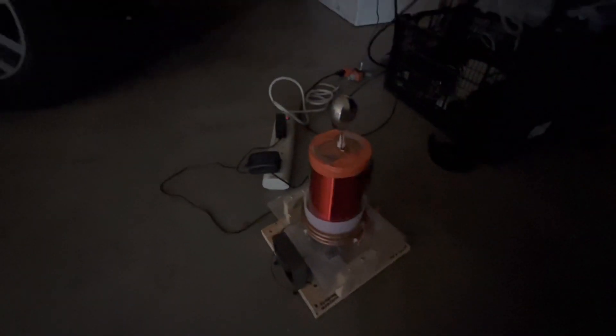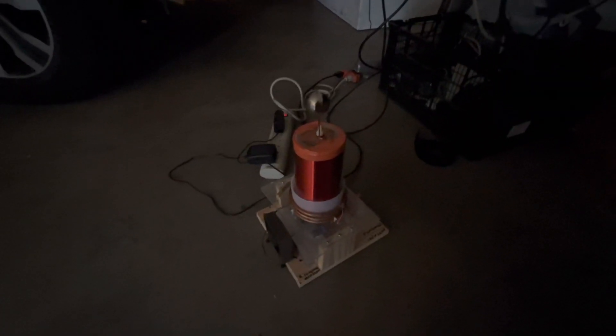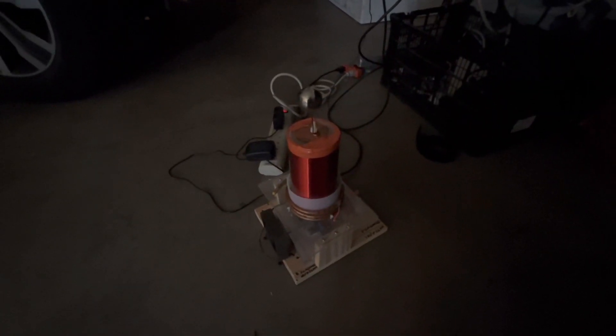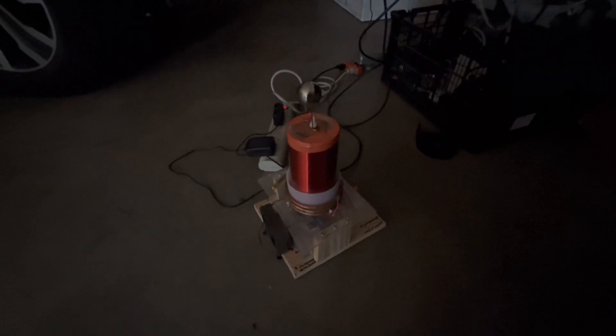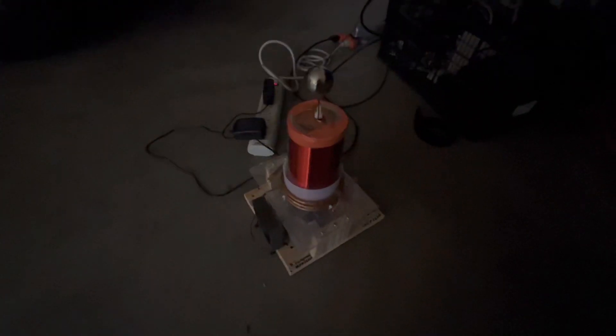Now one of the issues with these ZVS Tesla coils is typically you can't go very high on the voltage. Maximum I would say is around 45-48 volts, something like that. If you go up to 60, they're just going to blow up and short out.